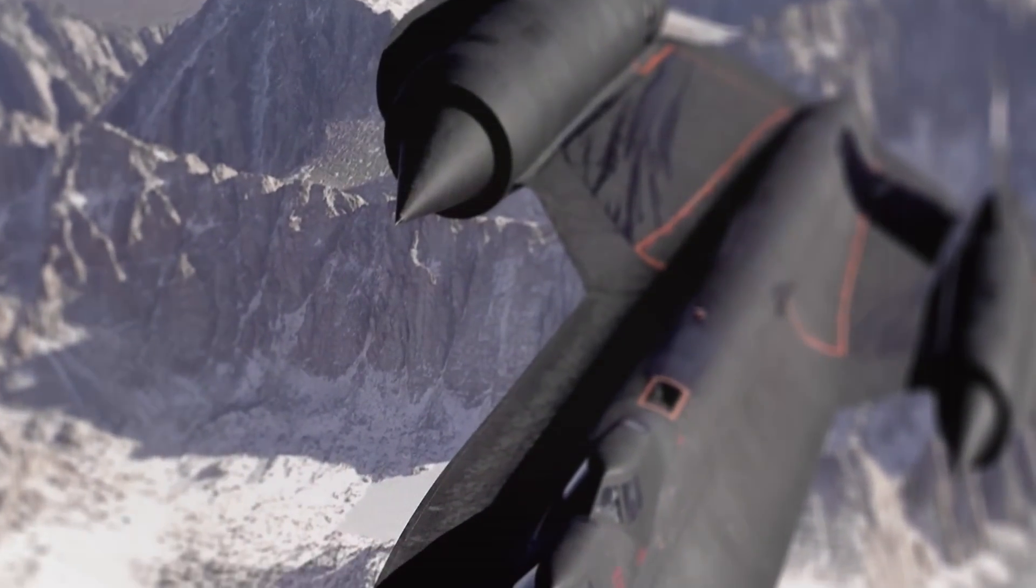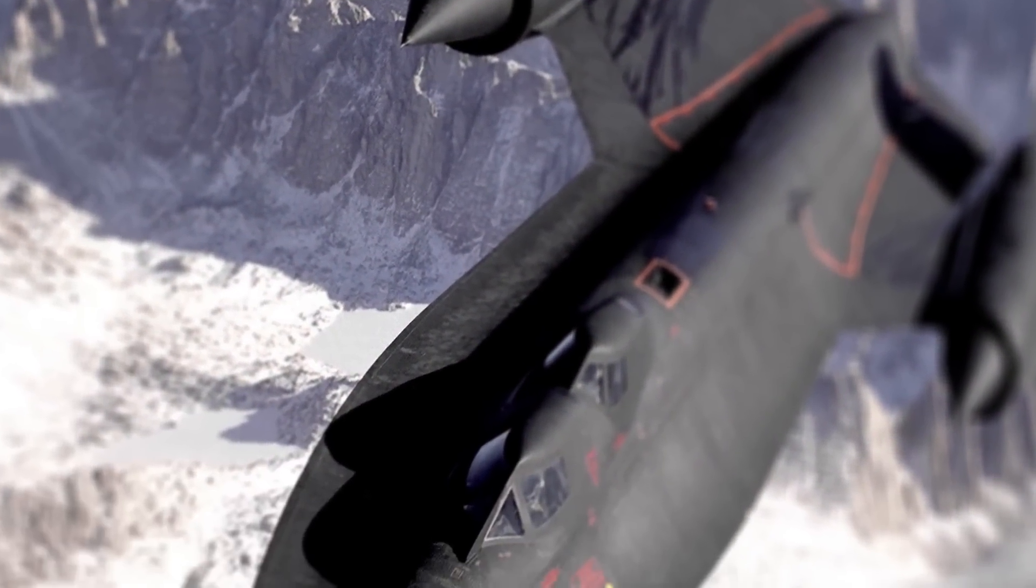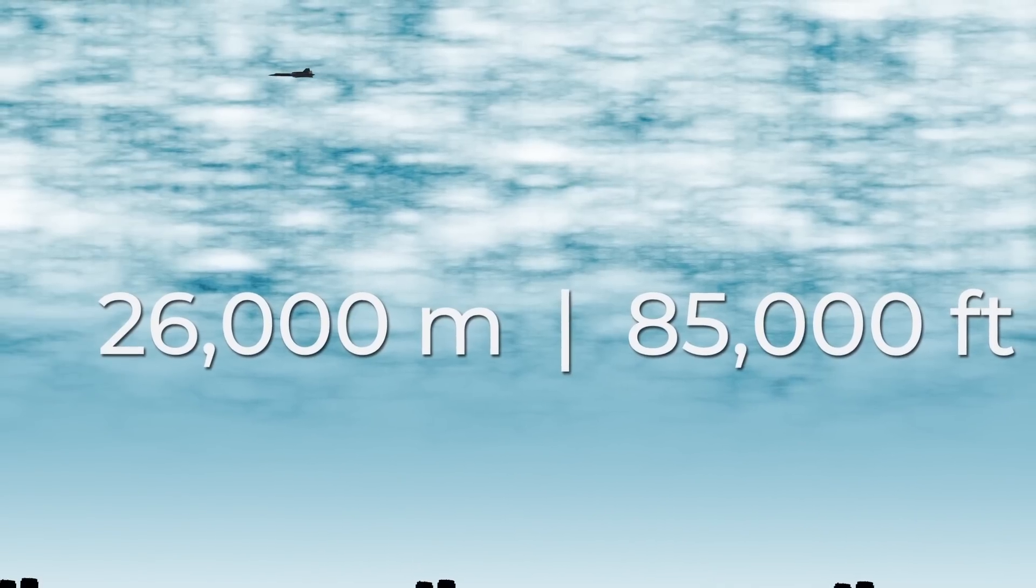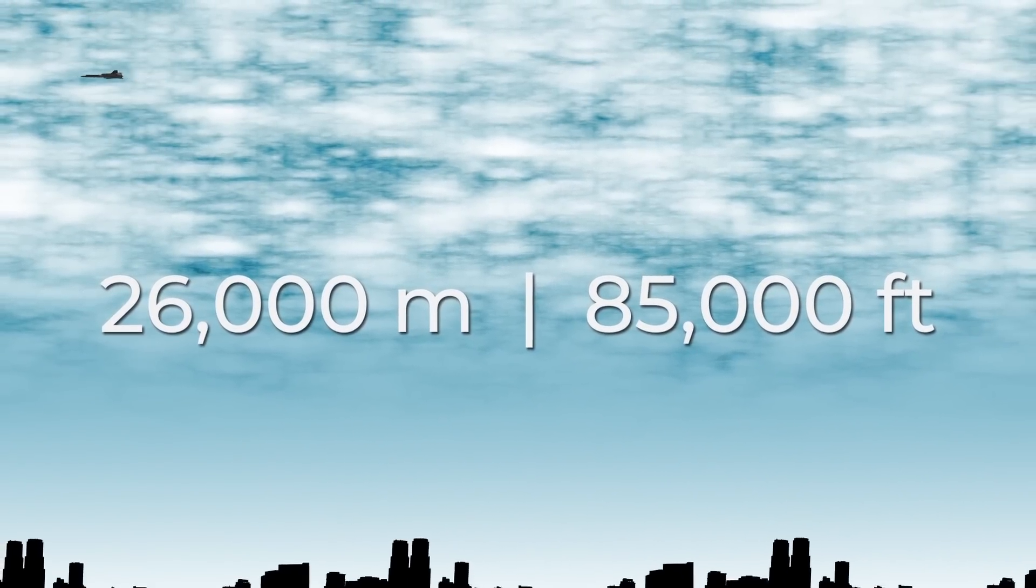The Blackbird is a strategic reconnaissance aircraft that was in service with the United States Air Force. It moved at a high altitude, just under 26,000 meters, or 85,000 feet, to stay out of reach of any potential threats.